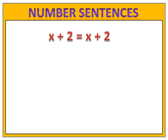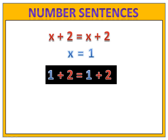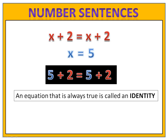Sometimes something special happens. Take the equation x plus 2 equals x plus 2. If we put 1 in for x, we get 3 equals 3 — true. The same thing happens for 2, 3, 4, and 5. When we have an equation that's always true, we call it an identity. That's an important word — be sure to write it down.